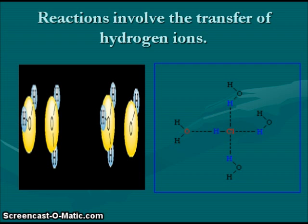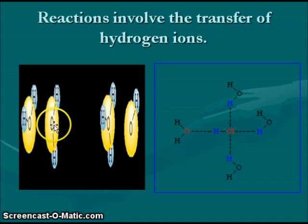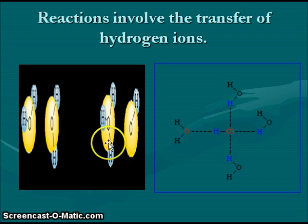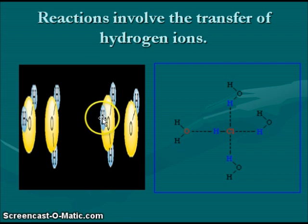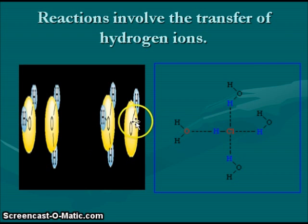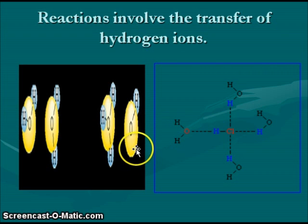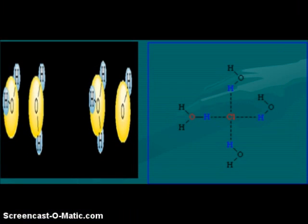Acid-base reactions involve the transfer of hydrogen ions. Here we see two water molecules. One water molecule has had an additional hydrogen added to it and becomes a hydronium ion. The water molecule which lost a hydrogen has now become a hydroxide ion.